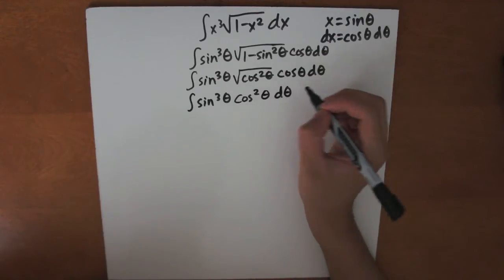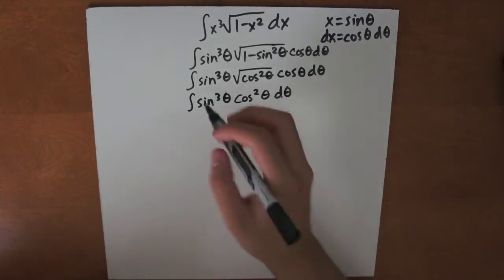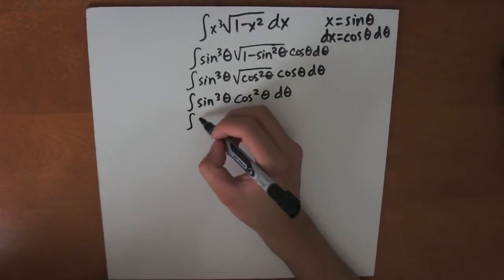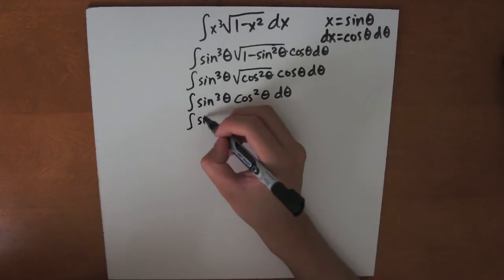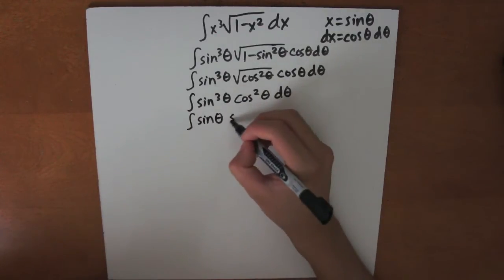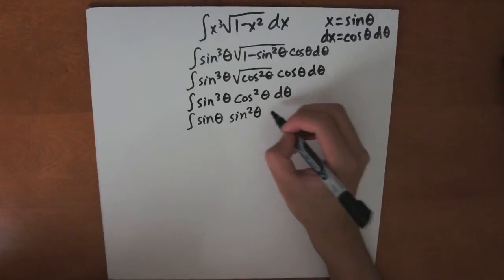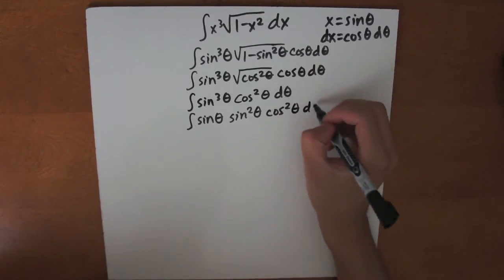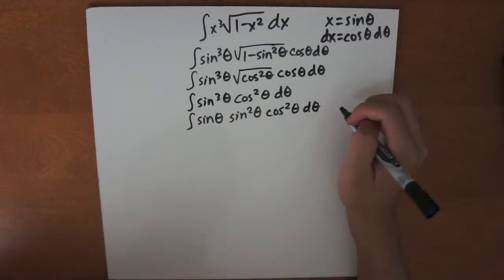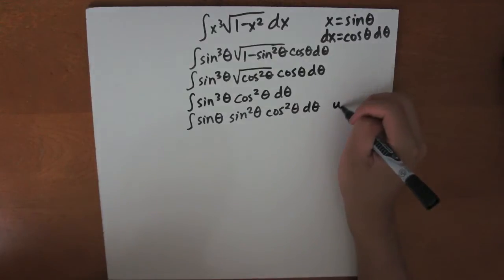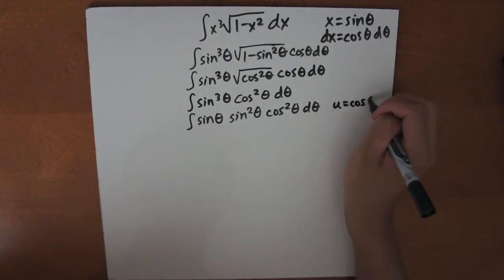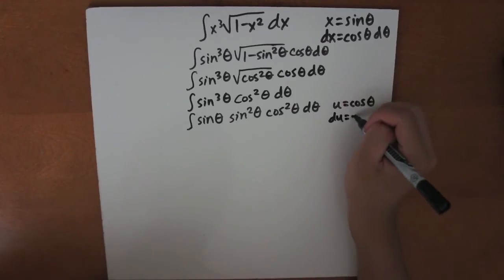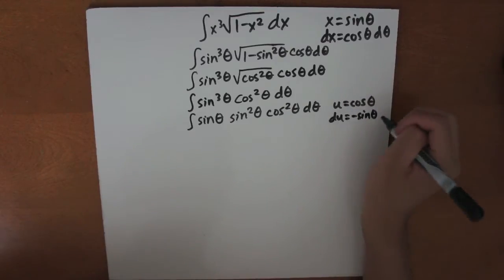Now let's evaluate this integral. We siphon off a sine, so we get sine theta times sine squared theta times cosine squared theta d theta. Now let's use the substitution u equals cosine theta. Therefore, du is equal to minus sine theta d theta.